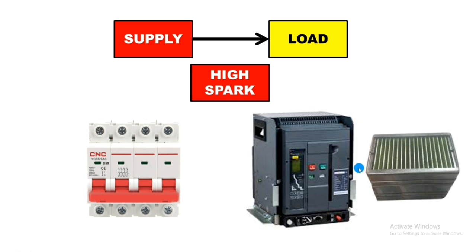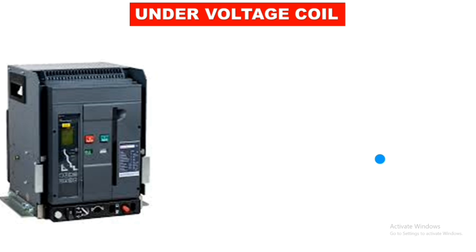To quench or reduce this high spark, an arc chute is connected in the air circuit breaker. Because the make and break process in an air circuit breaker is done at a very high amount of current, a very high spark is generated. So the arc chute provides an external air medium to quench or reduce this high spark. Arc chutes are not required in MCBs and MCCBs.